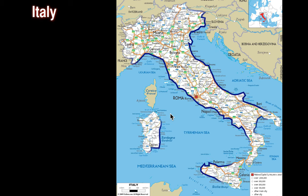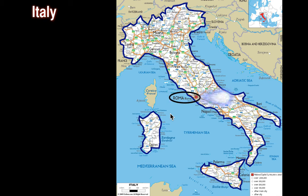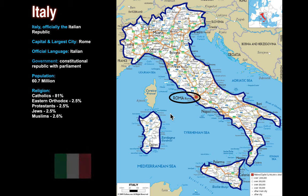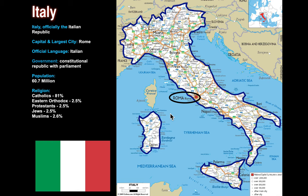Today Italy is a country — here are its boundaries with the capital city of Rome, and you can see there are two islands that are part of the country. The official language is Italian; they are a republic, a form of government like the United States. Population is about 60 million. As for religion, it's not surprising that Catholics comprise 81% — that's where the head of the Catholic Church is. Eastern Orthodox and Protestants add another 5%, meaning 86 out of every 100 people in Italy are Christians.